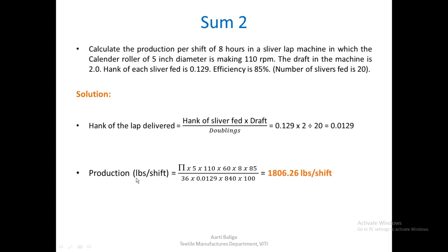We then calculate production in pounds per shift: π × d × n × 60 × 8 gives inches per shift; dividing by 36 converts to yards per shift. Dividing by (0.0129 × 840) converts yards per shift to pounds per shift. Multiplying by the efficiency factor of 85/100, we get a production of 1806.26 pounds per shift.